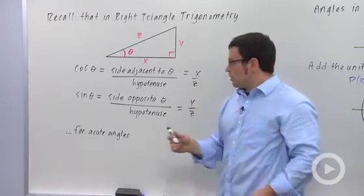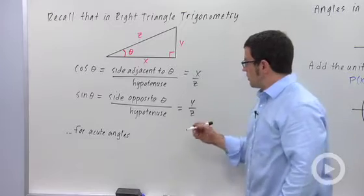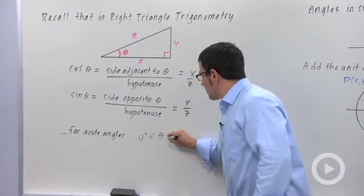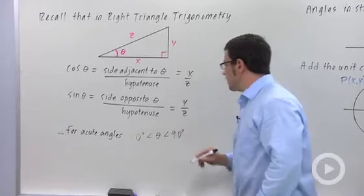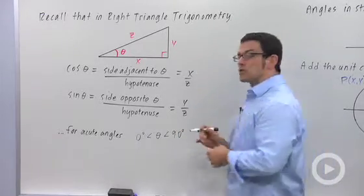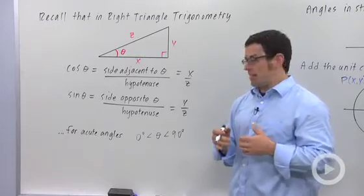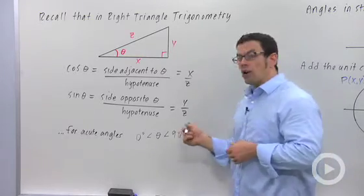The problem with this definition is that it only works for acute angles. So that means that theta has to be between 0 and 90 degrees, right? Or else this triangle won't make sense. So one of the things we do in pre-calculus is extend this definition so that it includes all angles.